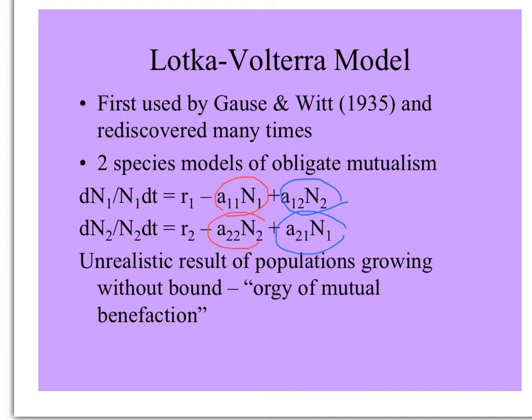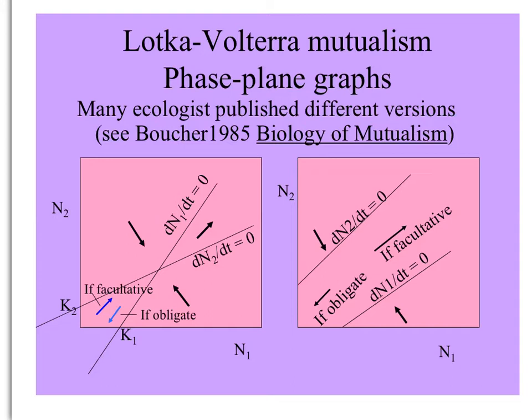This looked like a good idea but it had an unrealistic result of populations growing without bound, in what has been called an orgy of mutual benefaction. When you look at the phase plane graphs, you can see that the interacting species would increase to unlimited numbers. Some modifications for obligate mutualisms make things more equilibrium, but facultative mutualisms could lead to huge numbers of both species — an unrealistic outcome.